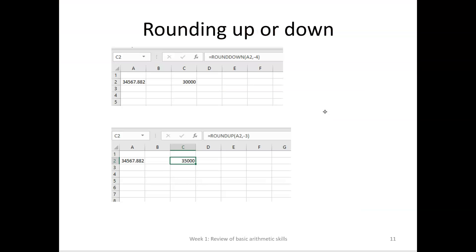If we're going to go to significant figures — say 1 significant figure — have a look at the number 34567. The second digit, the 4, is less than 5, so we're going to round down. But we need to get rid of 4 digits, so we use minus 4. For the next number going to 2 significant figures, the third digit is 5, so we use Round Up and need to get rid of 3 digits — so we go to minus 3 — and that gives us 35 and then all those zeros.